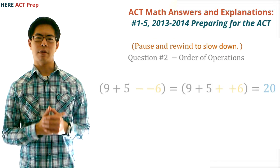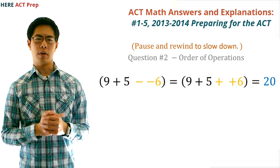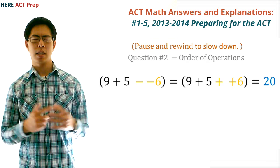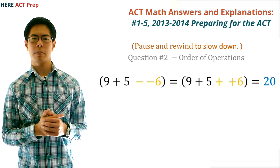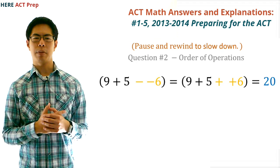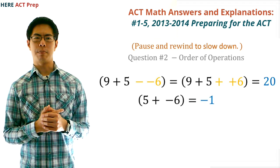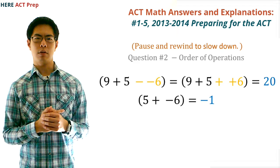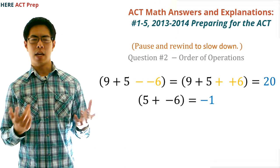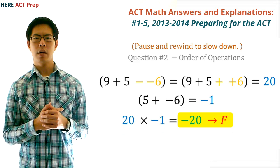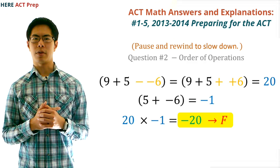In the first parentheses, we have R plus B minus G, or 9 plus 5 minus negative 6. Changing the minus and negative 6 to plus positive 6 gives us 9 plus 5 plus 6, which equals 20. In the second parentheses, we have B plus G, or 5 plus negative 6, which equals negative 1. Now we have 20 times negative 1, which equals negative 20. So F is the correct answer.